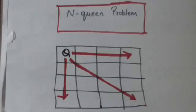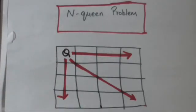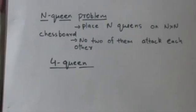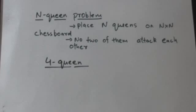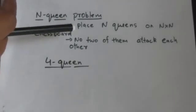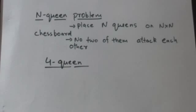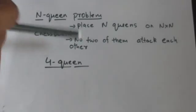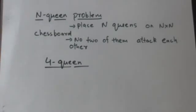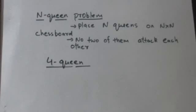Hello friends, welcome back. In this tutorial we will study about the N-Queen problem. In chess, queens attack horizontally, vertically, and diagonally. The N-Queen problem is how we can place N queens on an N by N chess board so that no two of them attack each other. Now let us solve a four-queen problem.